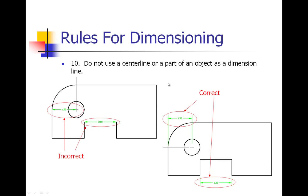Number ten: do not use a center line or a part of an object as a dimension line. On this one, we are using the center line as our dimension line. You don't want to do that. Down here we are using an object line as the dimension line, and we don't want to do that because it's not very clear. The correct way would be to pull those measurements outside of our part with a little sixteenth inch gap, making it much easier to read.